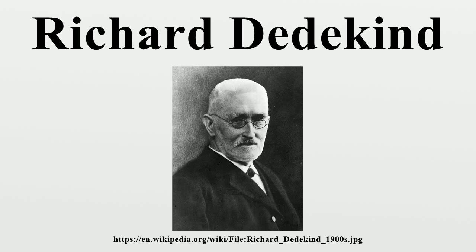He first attended the Collegium Carolinum in 1848 before transferring to the University of Göttingen in 1850. There, Dedekind was taught number theory by Professor Moritz Stern. Gauss was still teaching, although mostly at an elementary level, and Dedekind became his last student. Dedekind received his doctorate in 1852 for a thesis titled Über die Theorie der Eulerschen Integrale.